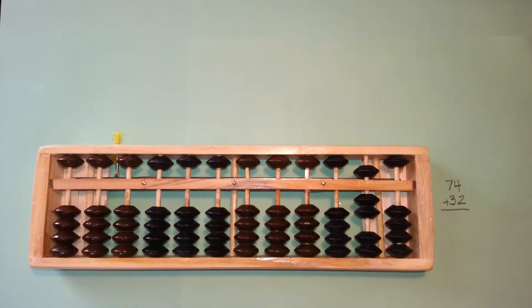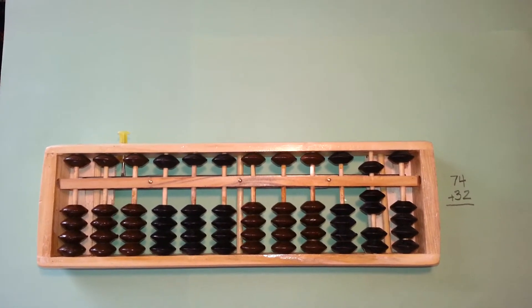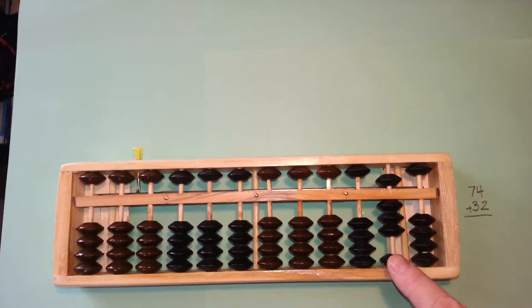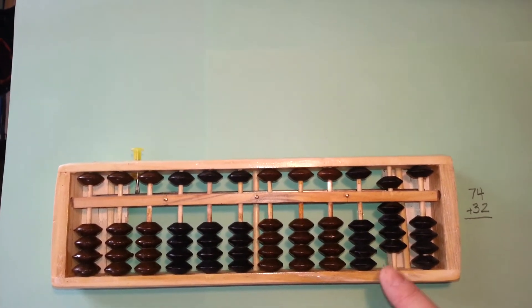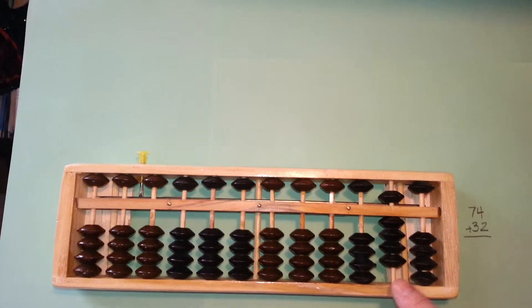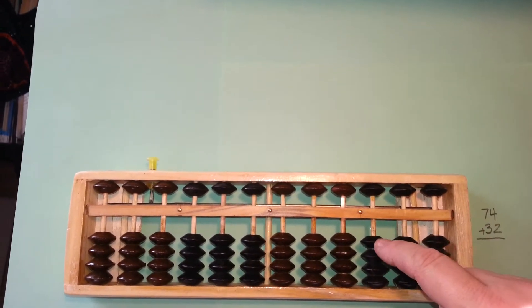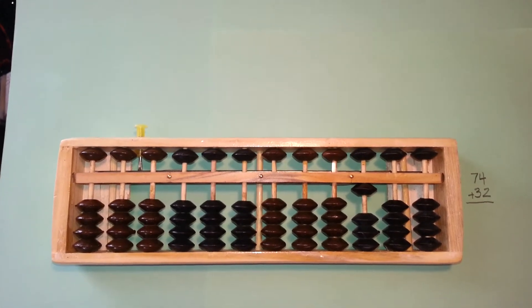Next we'll add three more to the tens rod. One, two, but now we're at the maximum of nine beads, so we simply put those back and add one from the hundreds place.